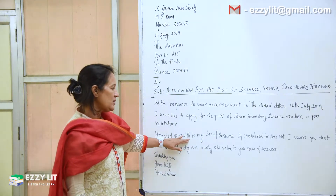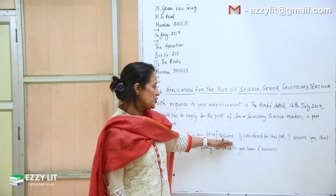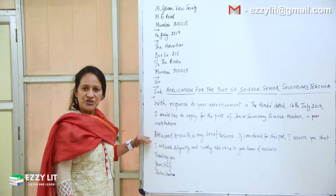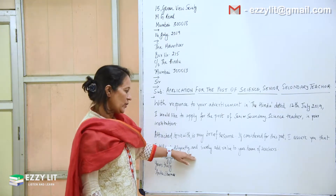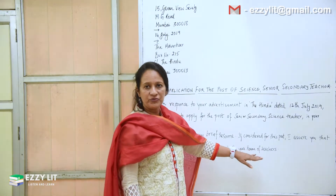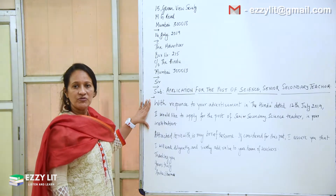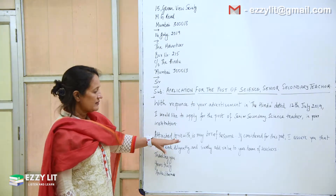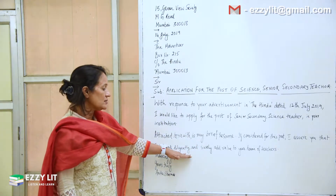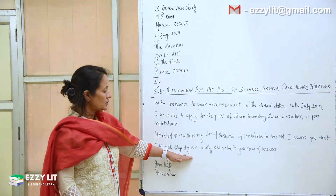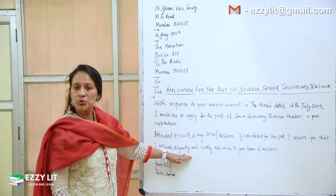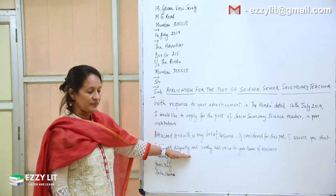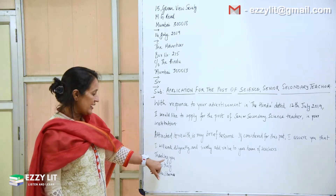Next paragraph: 'Attached herewith is my brief resume.' You can write 'bio data' too. 'If considered for this post, I assure you that I will work diligently' — that is sincerely, in a hard-working way — 'and surely add value to your team of teachers.' So the first paragraph is where you got the information and you say you would like to apply. The second paragraph says you have attached your resume and you try to convince the recipient that you would surely be of great value and will work with sincerity and dedication.